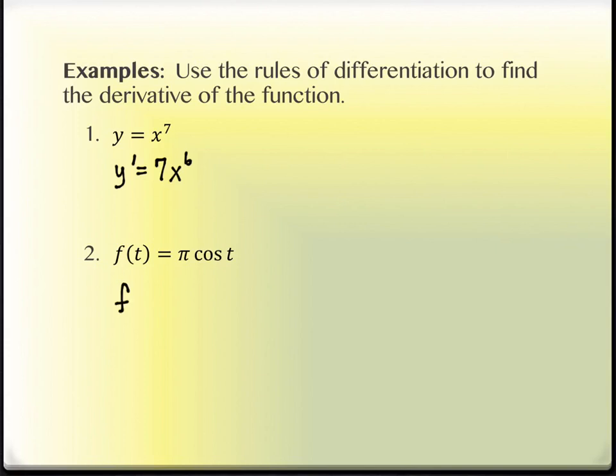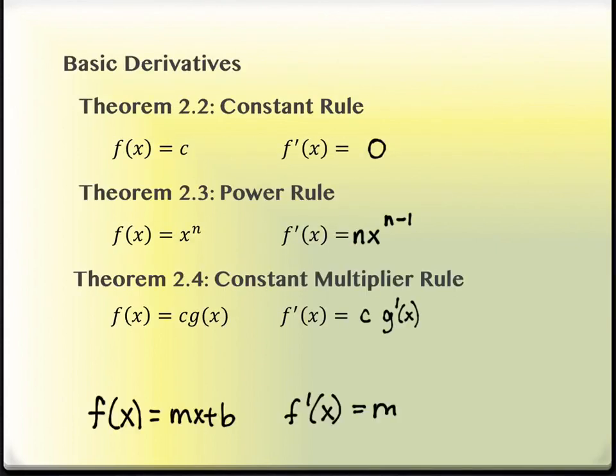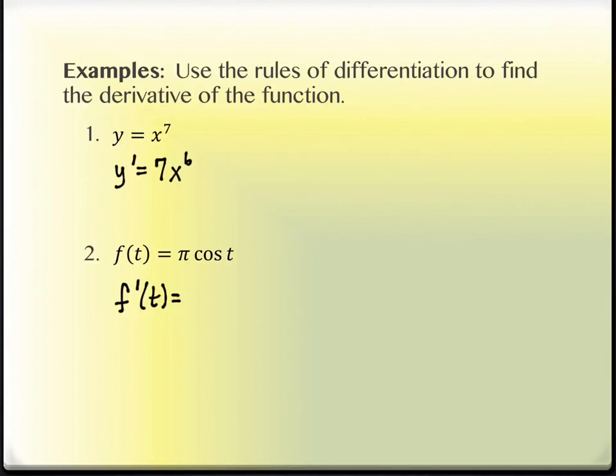How about number 2? f prime of t. Well, there's a pi at the beginning, but pi is just a constant multiplier. So it just comes along for the ride. What's the derivative of cosine? Negative sine. Now I need to be careful. I don't want to put pi minus cosine because that looks like subtraction. So I'd like to put the negative in front of the constant multiplier, like this. Another option is you could put this in parentheses and then move it if you didn't see it right away. But you can't leave it looking like a subtraction.